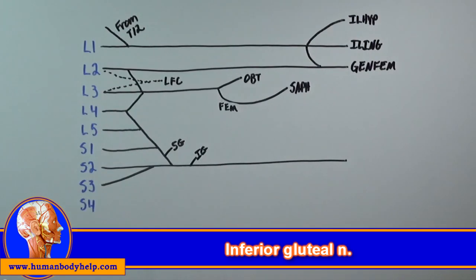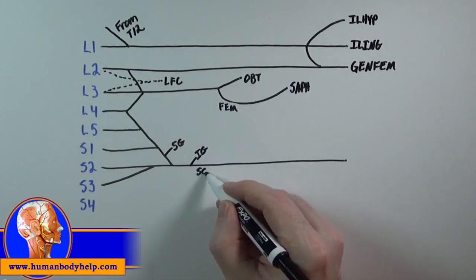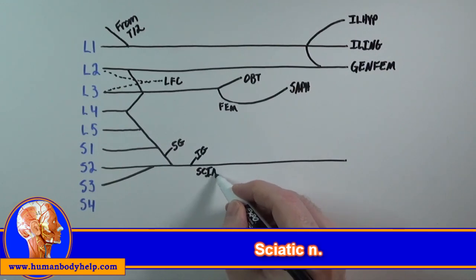The next branch is the inferior gluteal nerve, which supplies the gluteus maximus. After this, we're going to label the sciatic nerve. It's the largest nerve of the body, which runs down the posterior thigh.